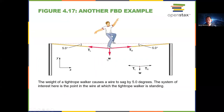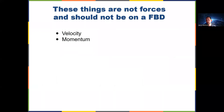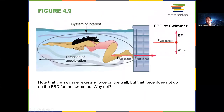Another free body diagram example: a person on a tightrope. Here we analyze a small bit of rope right under his foot. The right portion of the rope pulls it diagonally up and to the right, the left portion pulls it up and to the left, and the person's weight pushes down. The 'free' part of free body diagram means we don't draw the extra stuff — just a dot to represent the object and then the forces, getting rid of everything else.